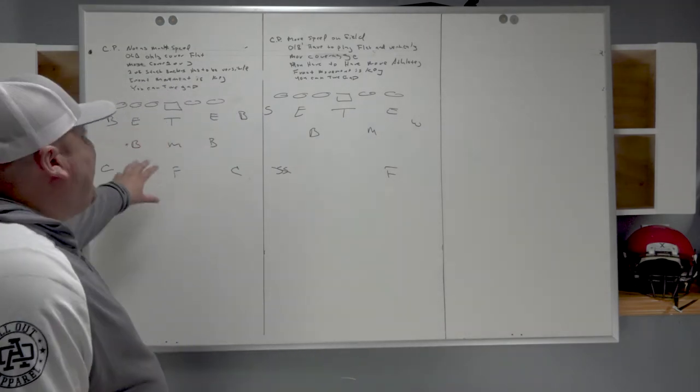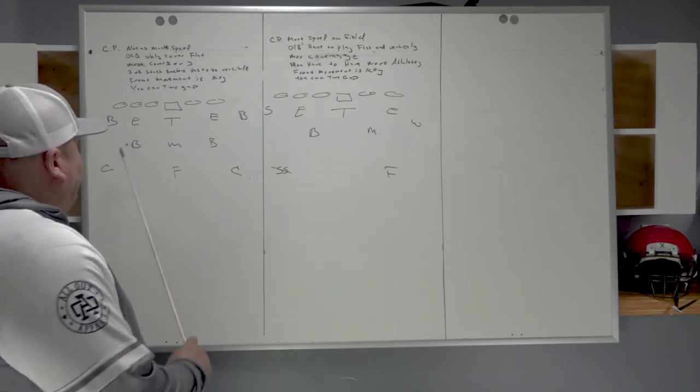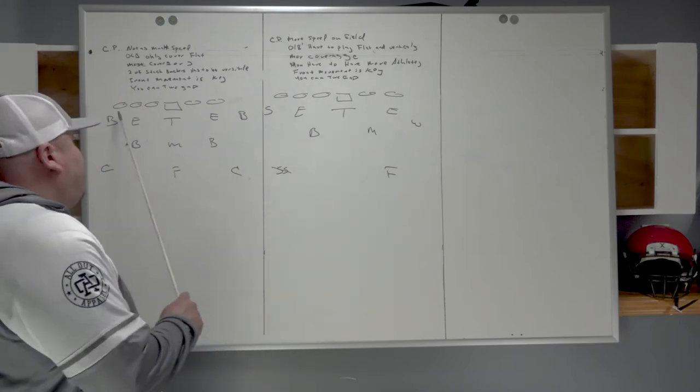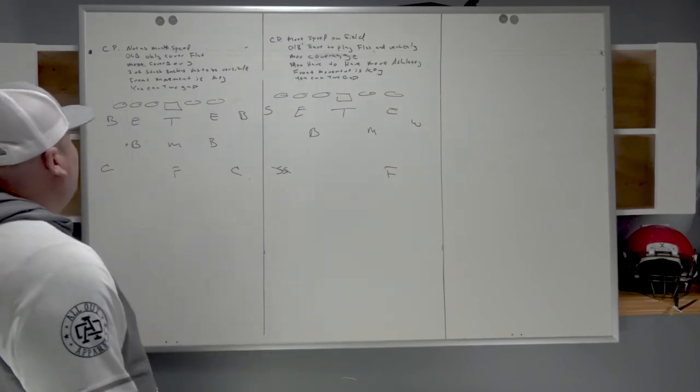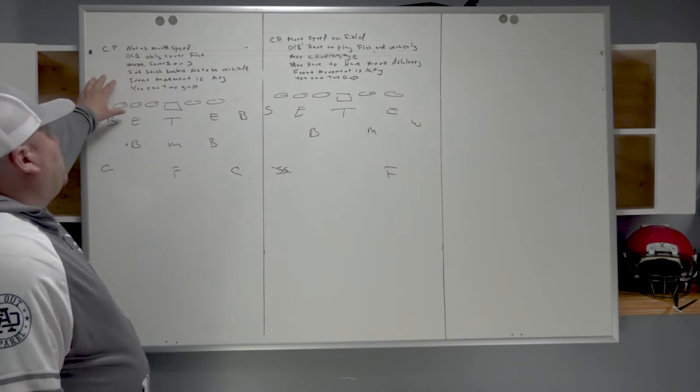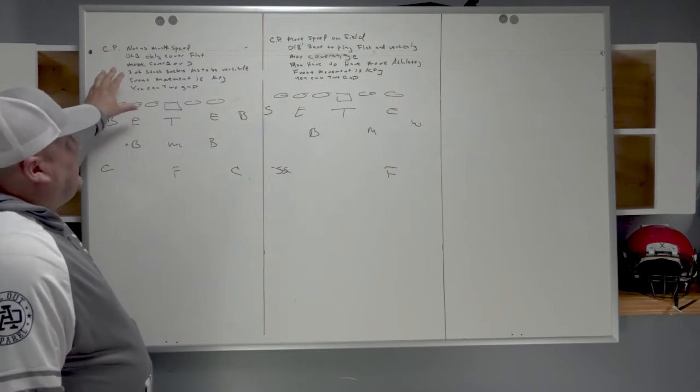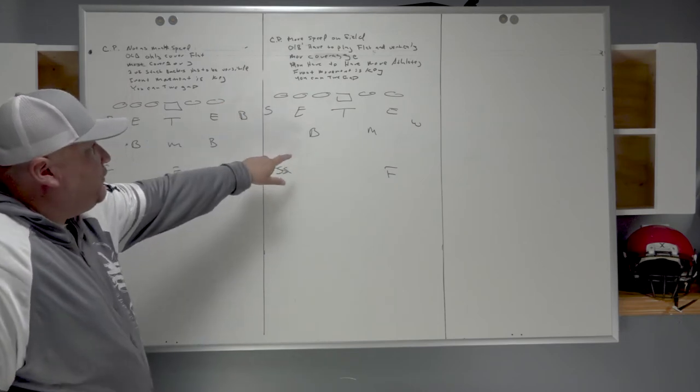We're going to start here with the 3-5-3 or 5-3, whatever you want to call it. You see we're going to get eight men to start with in the box compared to seven men in the box here with two high safeties. Here's the one high structure. In the 3-5-3 or 5-3, you're not going to get as much speed on the field as you will in that scenario over there with the 3-4.